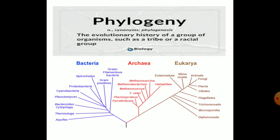Phylogeny is a very important term today, with many prominent scientists and researchers working on it. It represents the evolutionary history of a group of organisms such as a tribe or racial group. As you can see in the picture, the tree includes bacteria, Archaea, and Eukaryotes. Bacteria form the first clade, giving us the kingdom Monera. Under Archaea we have early eukaryotes, and Eukaryotes include larger organisms like Entamoeba, slime molds, animals, fungi, and plants.